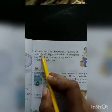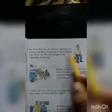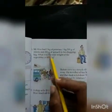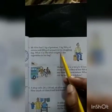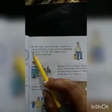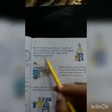Mr. Alway had 2 kg of potato, 1 kg 500 gram of onions, and 250 gram of spinach in his shopping bag. What was the total weight of the vegetables in his bag?